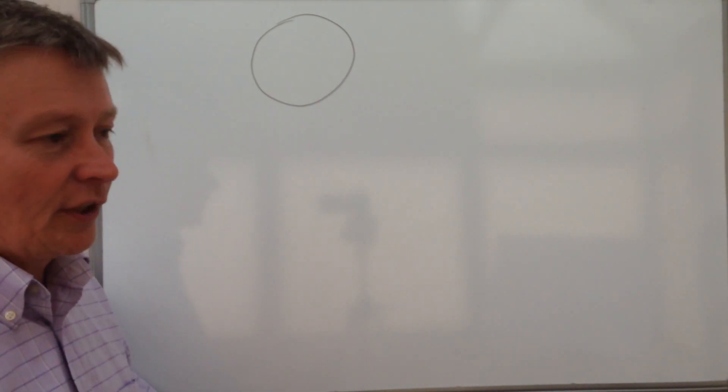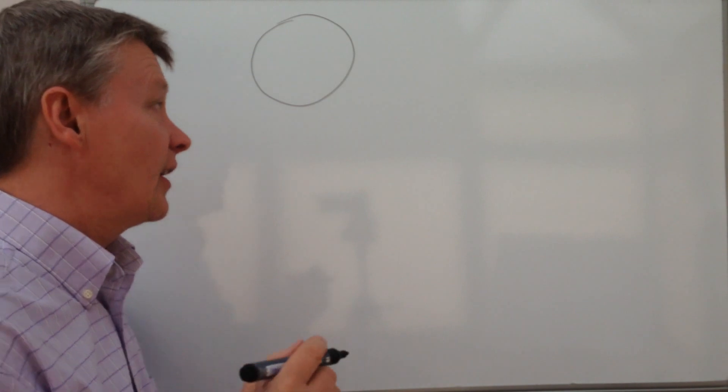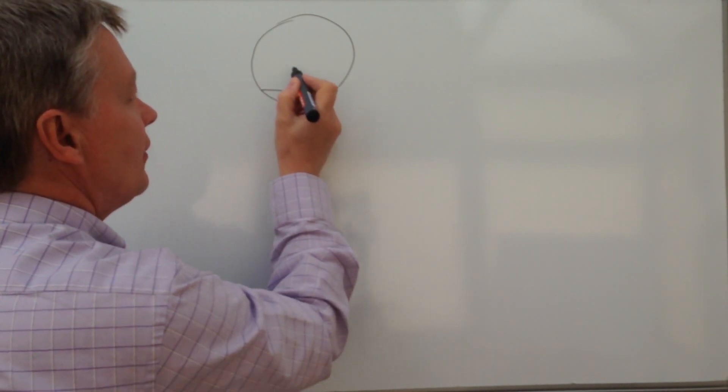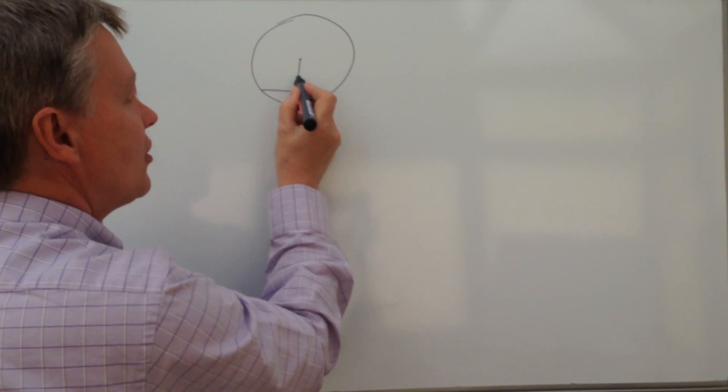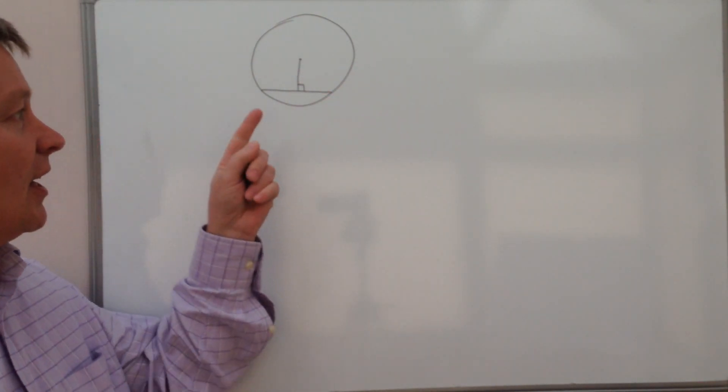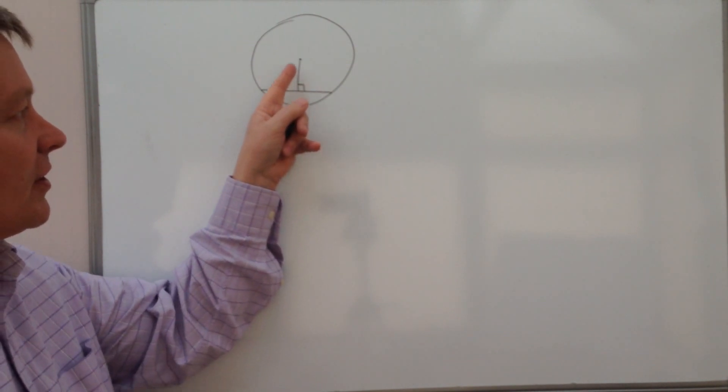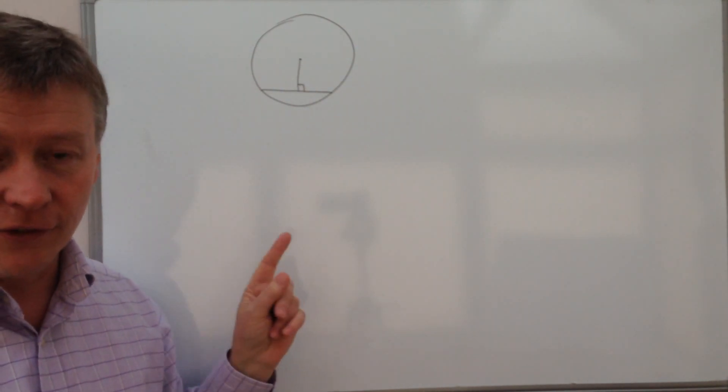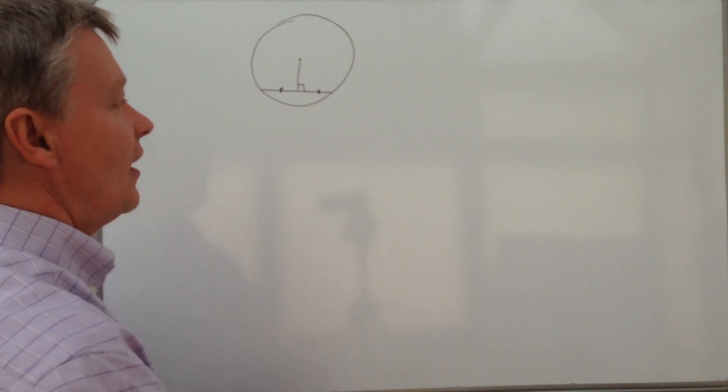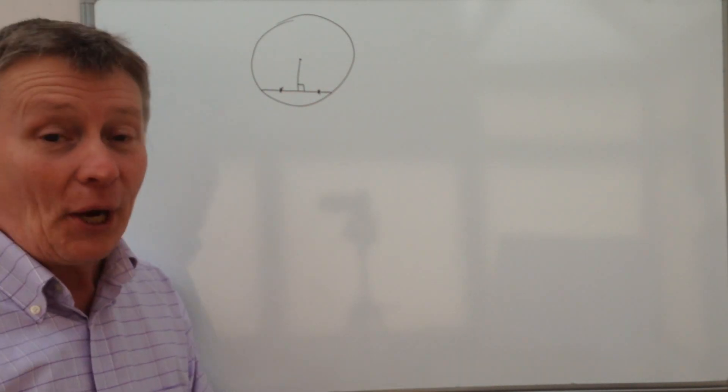So for instance, one of the circle theorems, which is actually number 6, is that if you have a chord and the radius to that chord is perpendicular to it, so in other words it's 90 degrees, you've got a radius which is 90 degrees to the chord, then this side and this side are the same length.